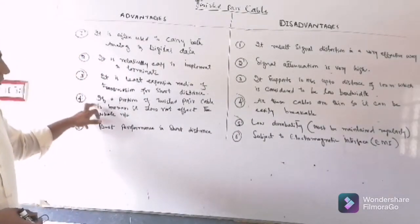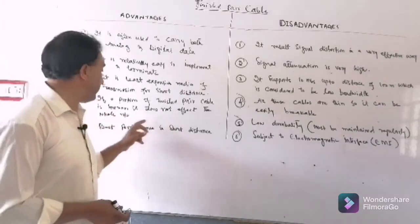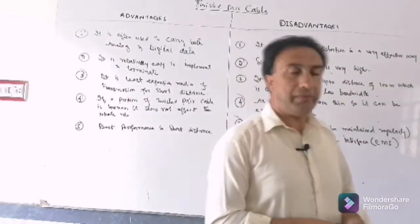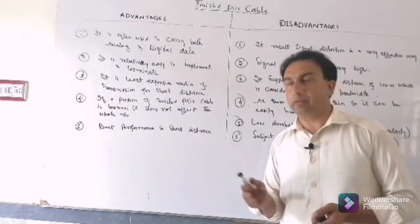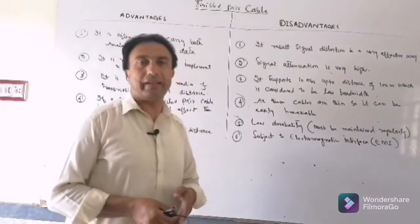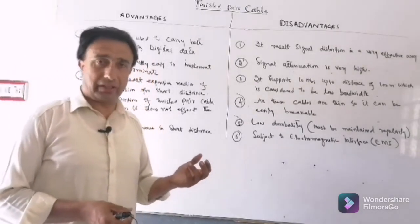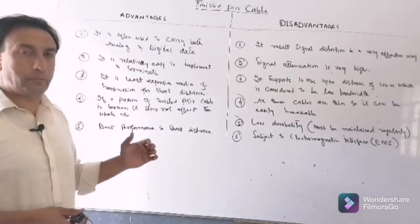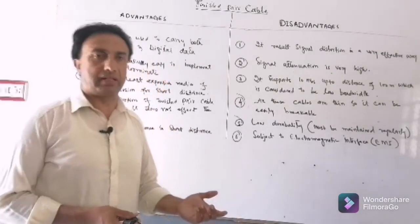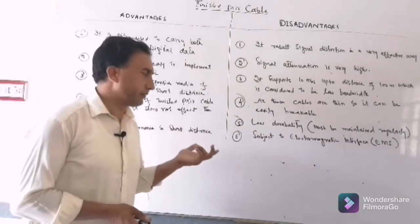The fourth advantage is that if a portion of a twisted pair cable is broken, it does not affect the whole network. If a portion or segment of a twisted pair cable breaks down, it does not cause the whole network to fail. The signal will still pass from one segment to another.